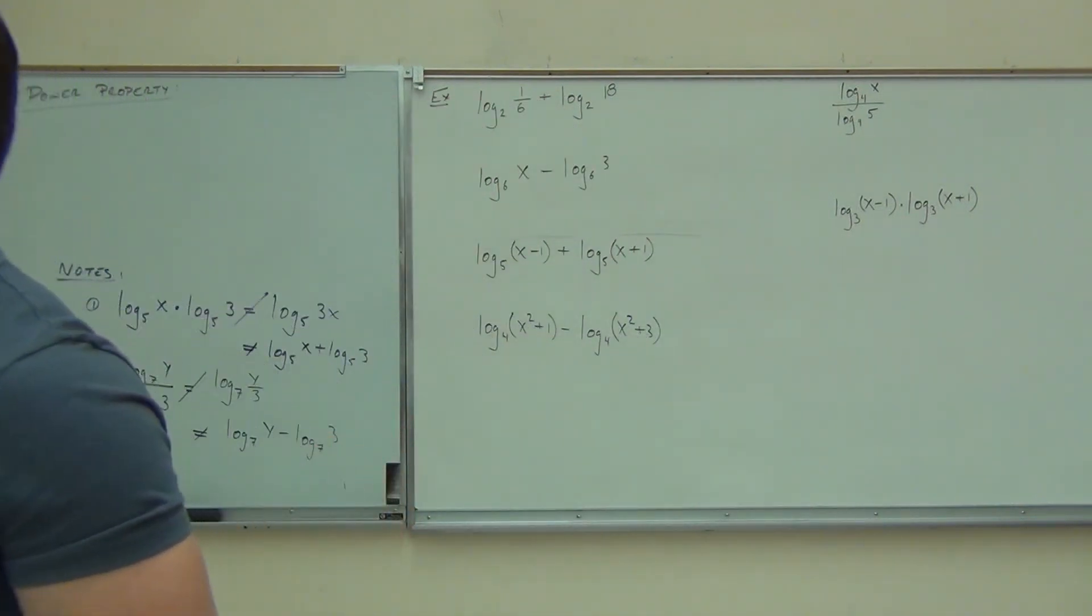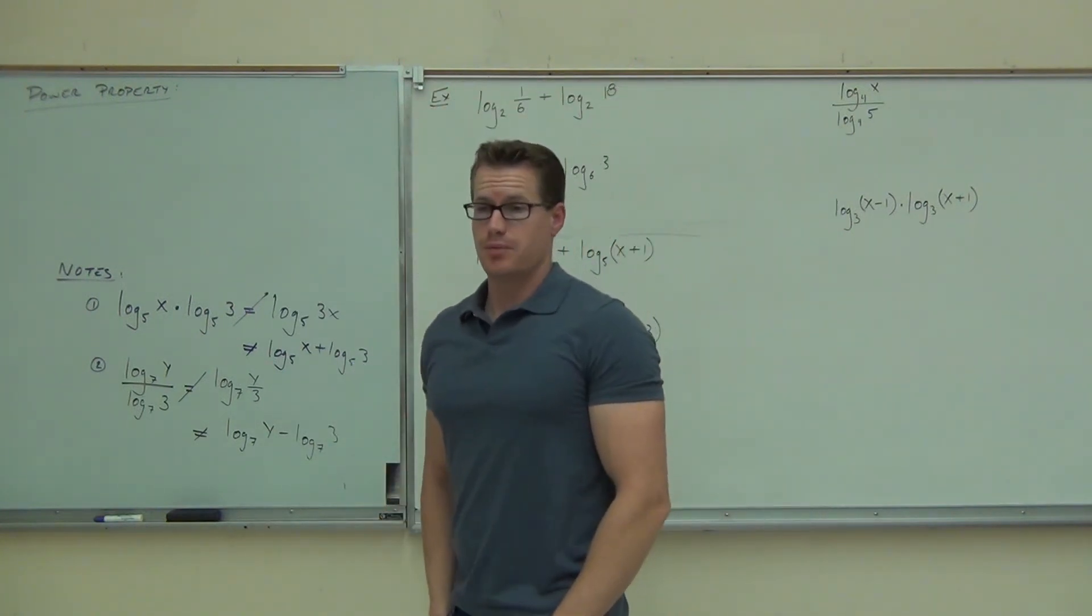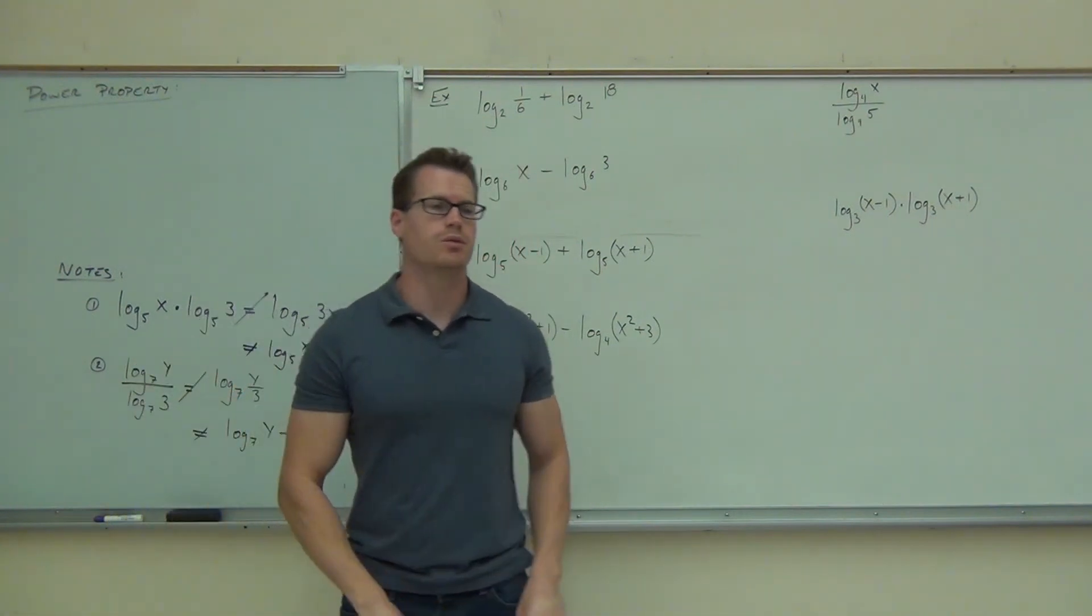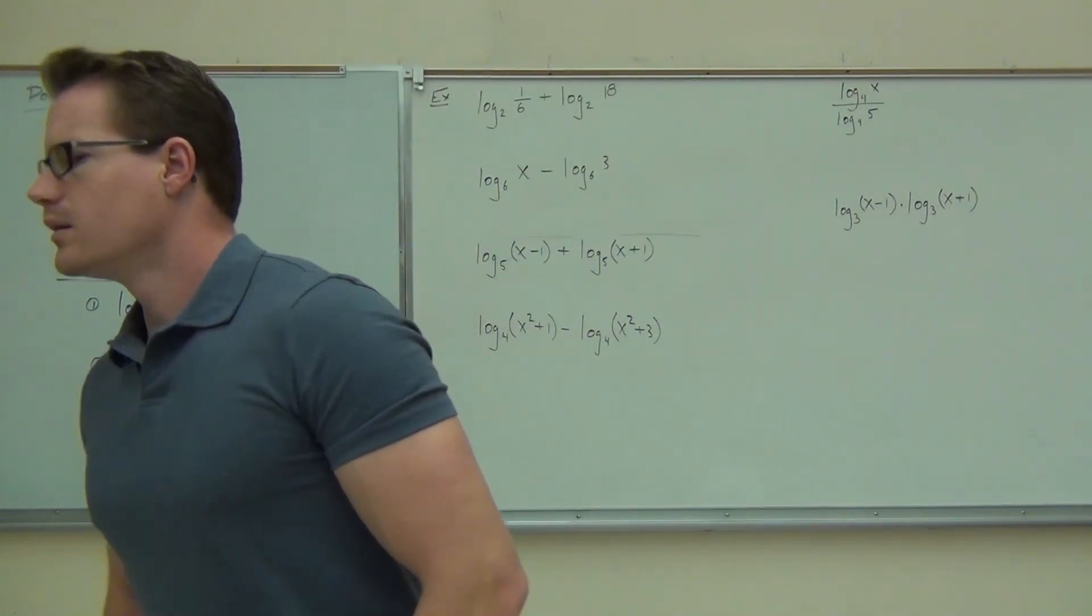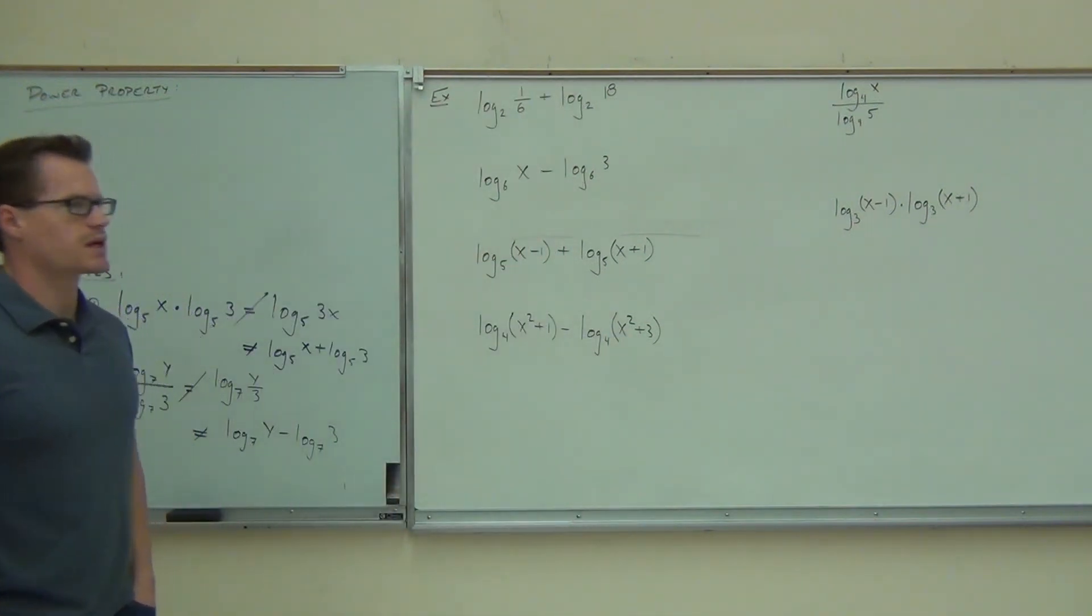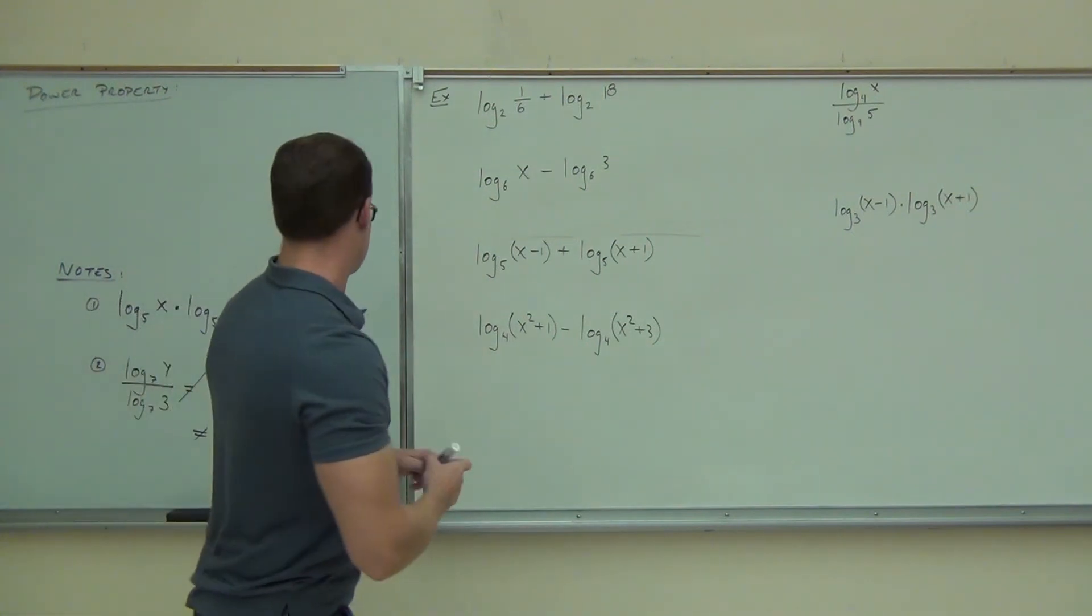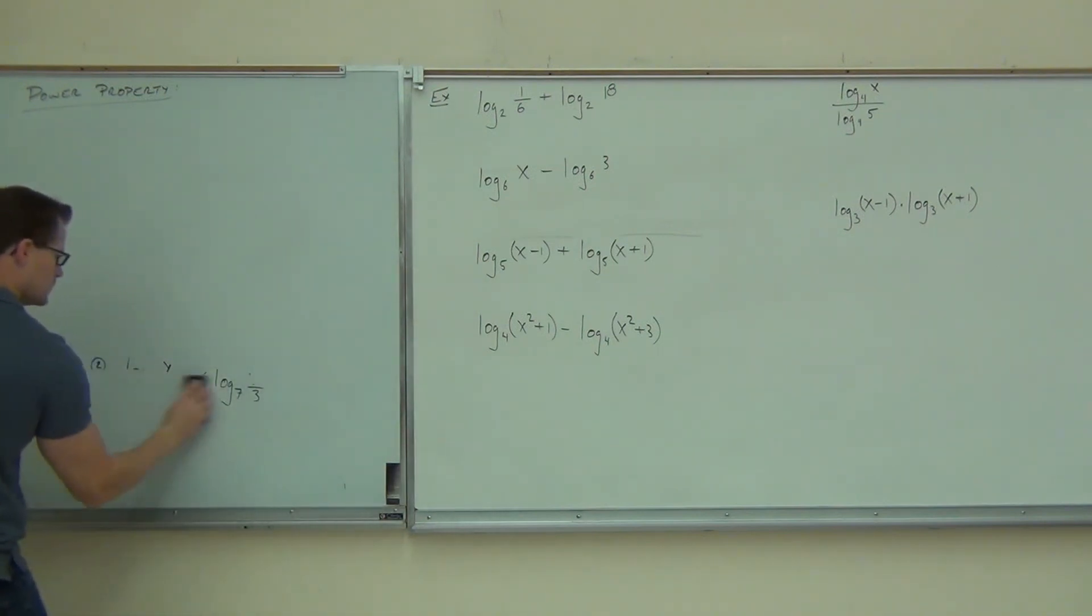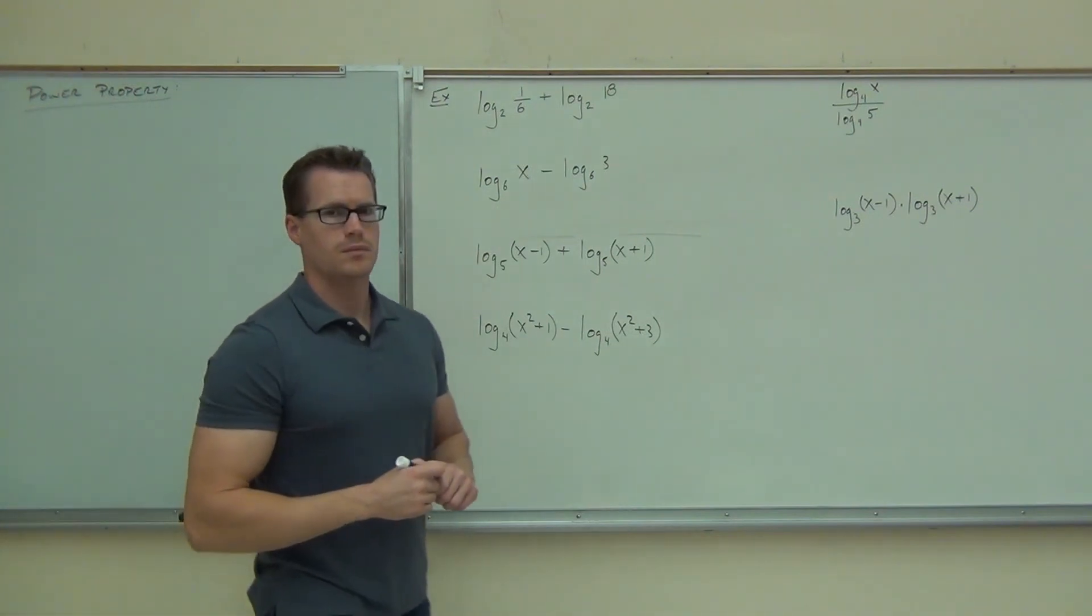So these properties say if we have two logarithms being added together, that's a product property. We combine that by a product. If we have two logarithms being subtracted, that's a quotient property. We combine those with a quotient. If it's not exactly like those things, we can't do anything with it. Looks like we're about done up here. Take a couple more seconds to see if we can wrap it up.